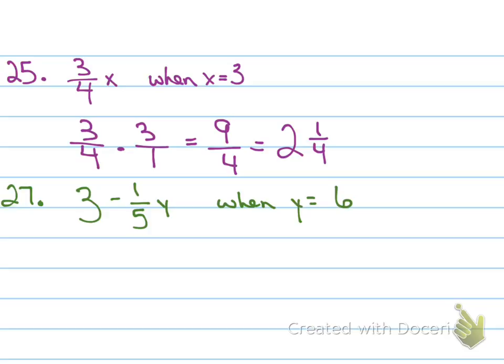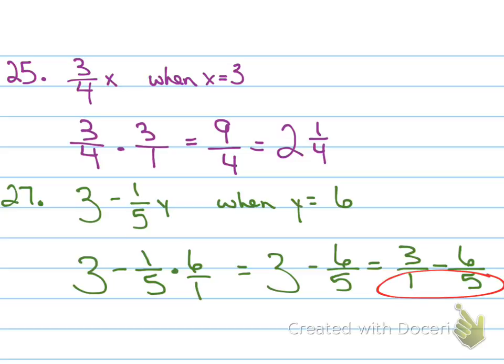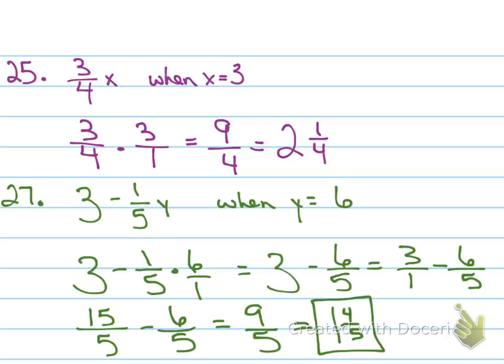So 3 minus 1 fifth Y. What do you do first? First, you multiply 1 fifth times 6 over 1. I would leave it an improper fraction. But now when you're subtracting, what do you have to have? What do you have to have, guys? It's the least common denominator. What is your LCD? 5. So 15 over 5 minus 6 over 5 is 9 over 5, 1 and 4 fifths. Did you get it right? Did you get it? Malcolm, did you get it? So that's one of the tougher problems that you'll see. But if you understand that, that is everything you need to know for 5.3.